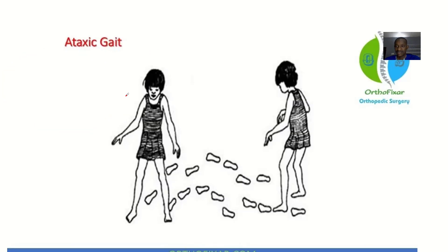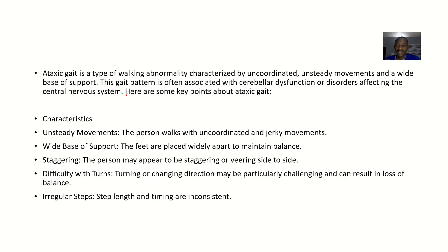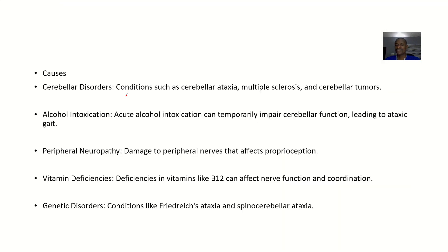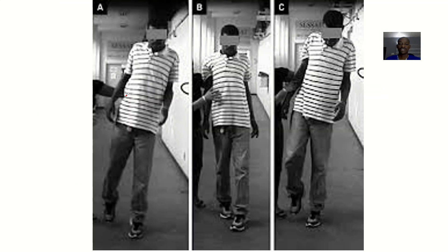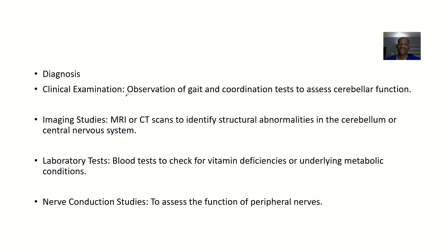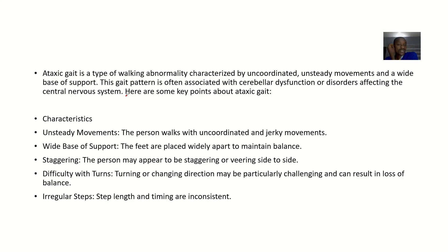For the next type of gait, we're looking at the ataxic gait, also known as cerebellar gait. In looking at this gait, we get to look at the definition, the characteristics, the causes — what could cause that type of gait — and each type has a characteristic movement. We also get to look at the diagnosis and the possible treatment for that gait.